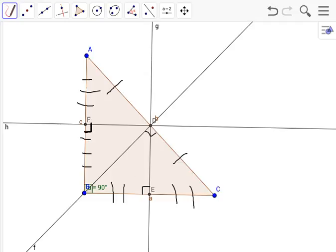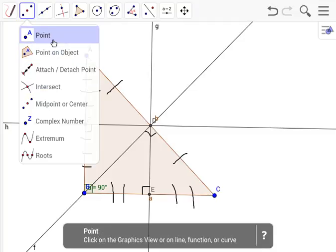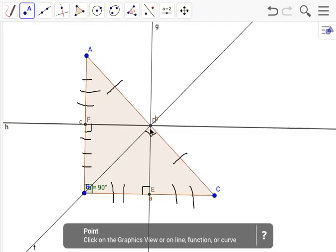So next we're going to find the circumcenter, which is actually found already for us right here. Fun fact: the circumcenter, if it's a right triangle that you're trying to find it for, will always lie on the hypotenuse.